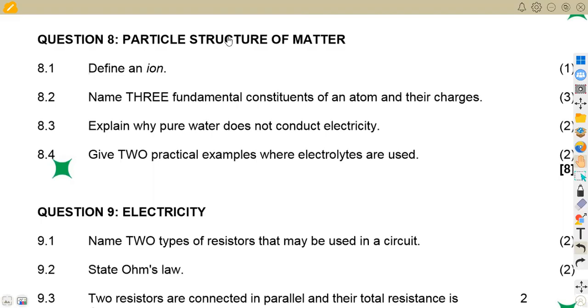On question 8.1, we are asked to define an ion. How can we define this or what is the definition for an ion? So in this case, we have that an ion is an atom that gained or lost an electron. All right, so that's a simpler definition that we can give for an ion, and that's just one mark.